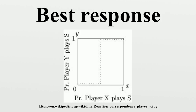There are several advantages to using smoothed best response, both theoretical and empirical. First, it is consistent with psychological experiments — when individuals are roughly indifferent between two actions, they appear to choose more or less at random. Second, the play of individuals is uniquely determined in all cases, since it is a correspondence that is also a function. Finally, using smoothed best response with some learning rules can result in players learning to play mixed strategy Nash equilibria.